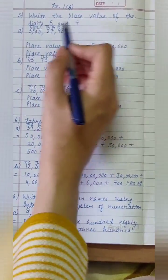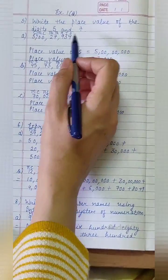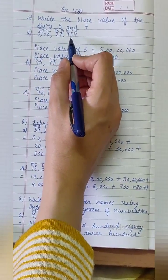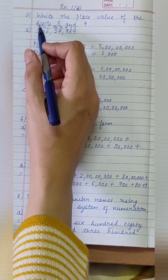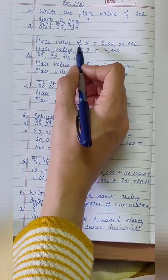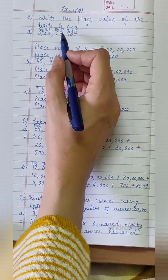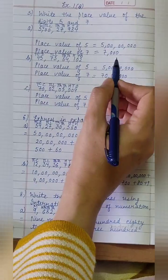Write the place value of the digits 5 and 7. Part A is 50027934. Since 5 is at crore's place, its place value will be 5 crore. And 7 is at thousandth place, its place value will be 7000.